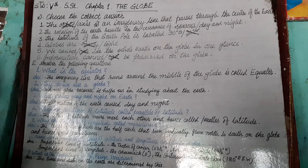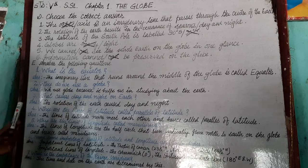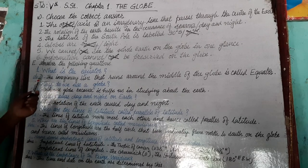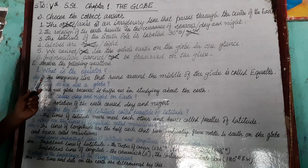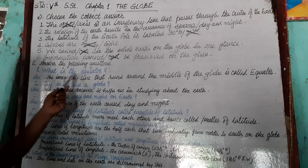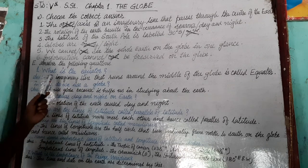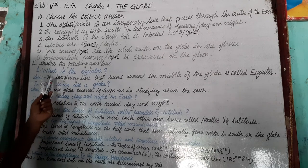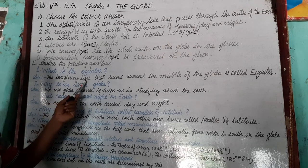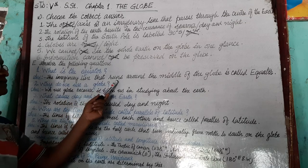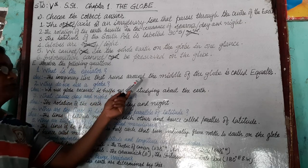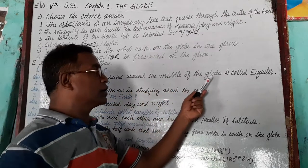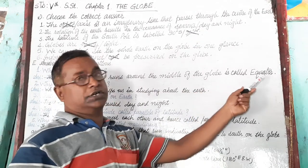Answer the following questions. First question: What is the equator? The equator is the imaginary line that runs around the middle of the globe.